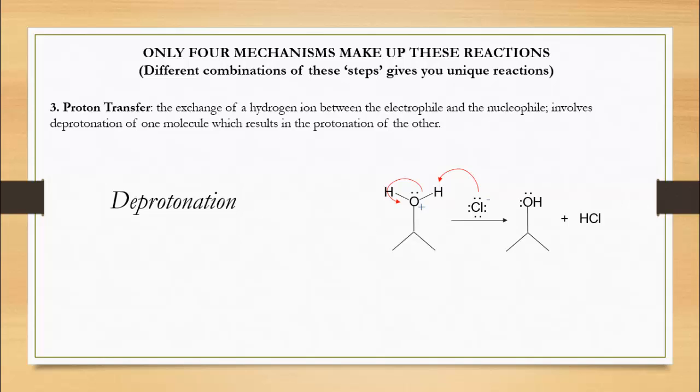Here is a reverse reaction, which brings up an important point to remember. Proton transfers are always reversible. The chlorine extracts the proton and forces the deprotonation of the newly formed water molecule, which gives you back the alcohol and hydrochloric acid you started with.